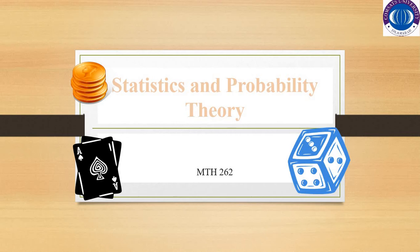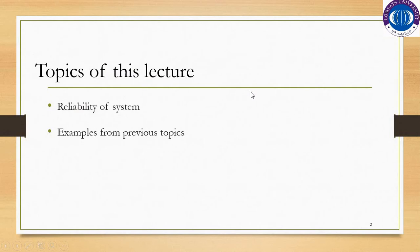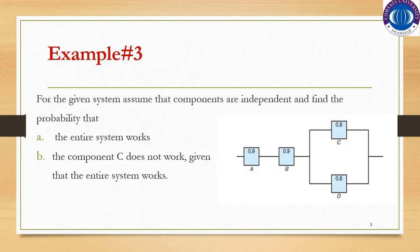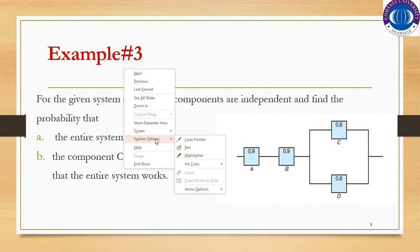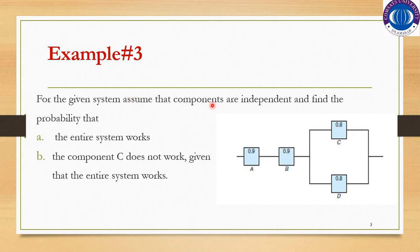Welcome to the second part of the sixth lecture of Statistics and Probability Theory. We will continue with the topic of reliability of the system and we will discuss some more examples. Example number 3: for the given system, assume that components are independent and find the probability that the entire system works.